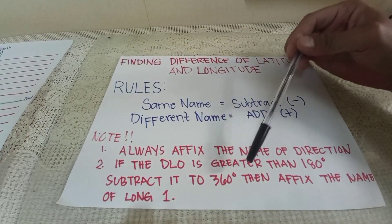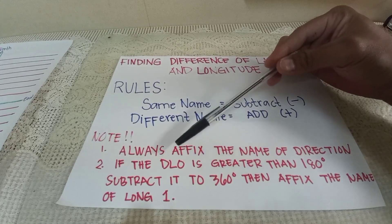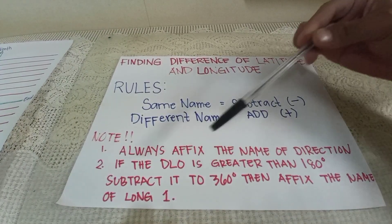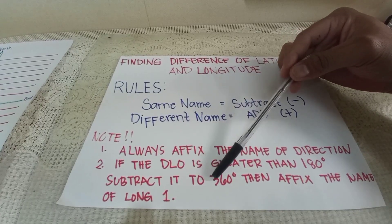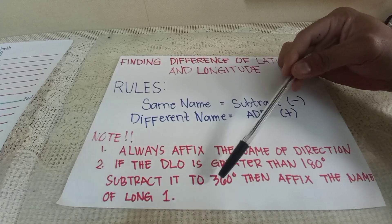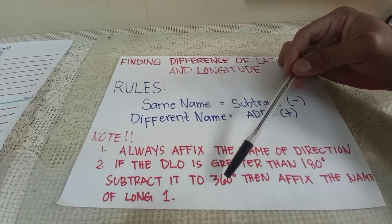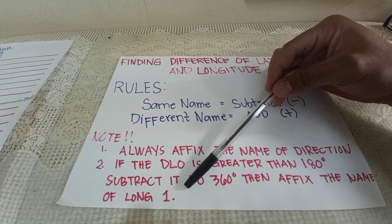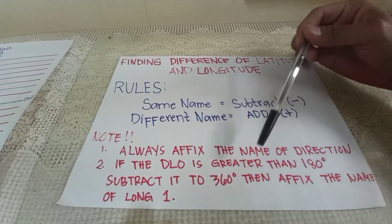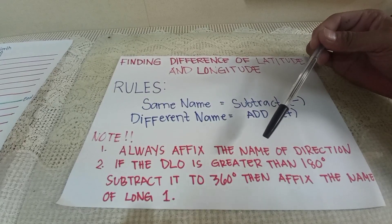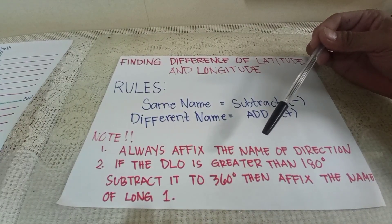This is very clear. If you have the DLong greater than 180 degrees, subtract it from 360 degrees — that is your DLong — and then to affix the name, you have to copy the name of longitude 1. I will give you several examples to help you understand the difference of latitude and longitude.